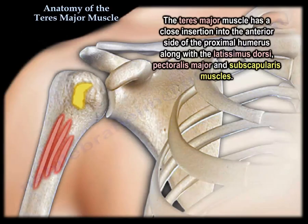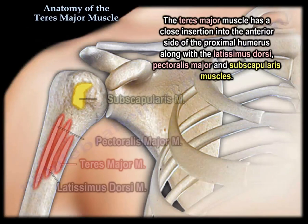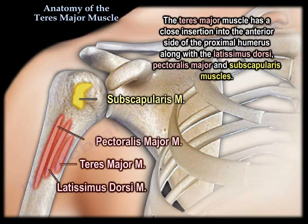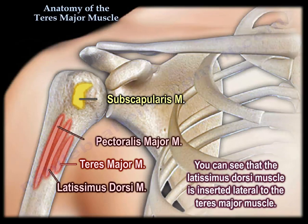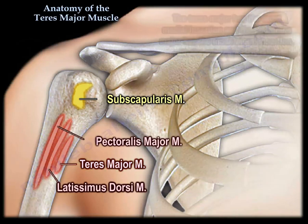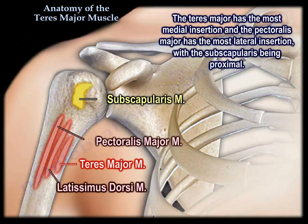The teres major has a close insertion into the anterior side of the proximal humerus, along with the latissimus dorsi, the pectoralis major, and the subscapularis muscle. As you can see in this diagram, the latissimus dorsi is inserted lateral to the teres major.